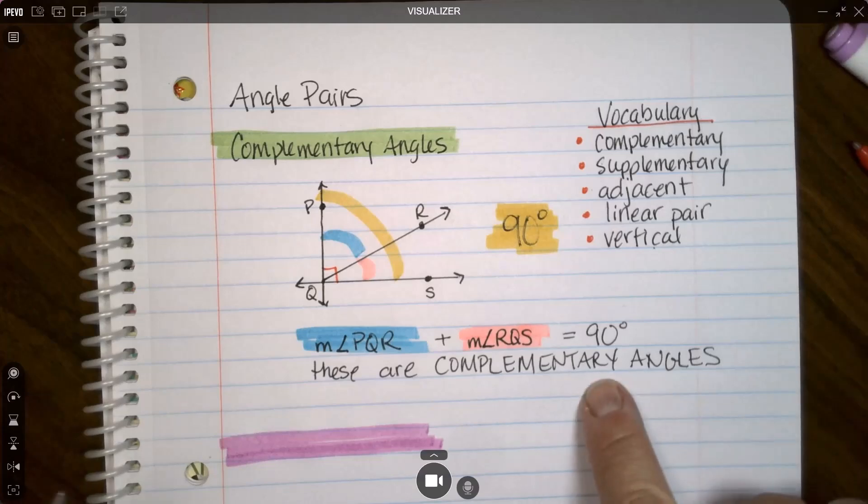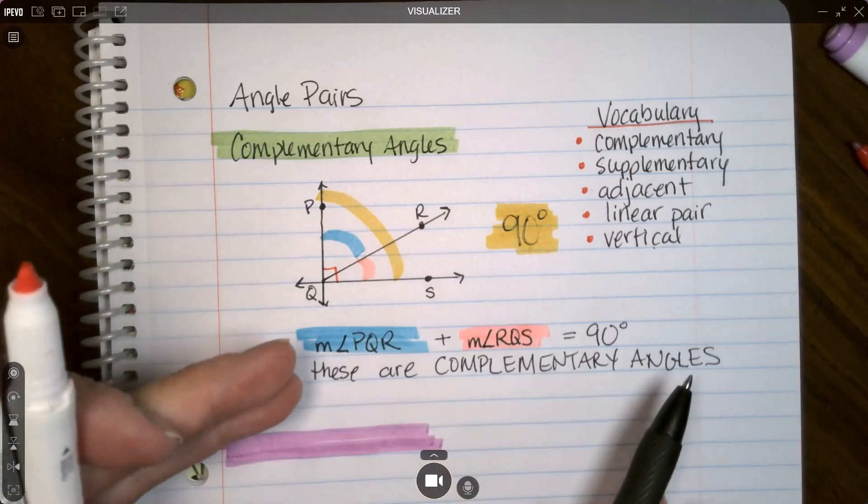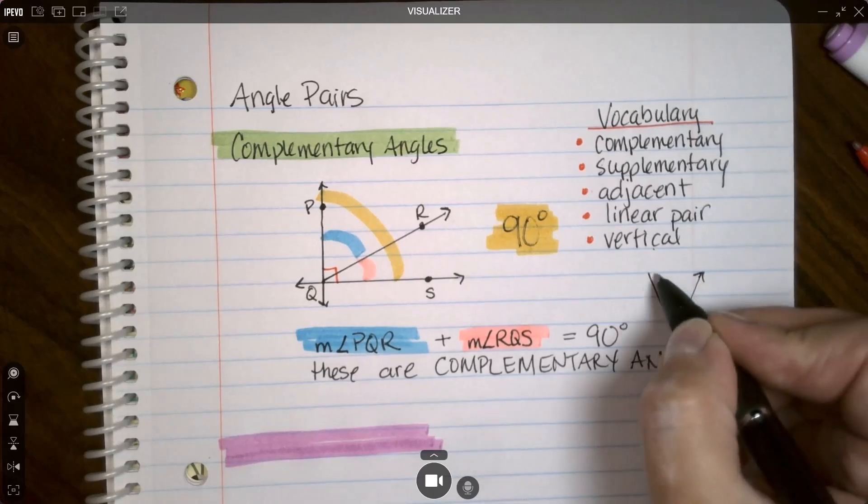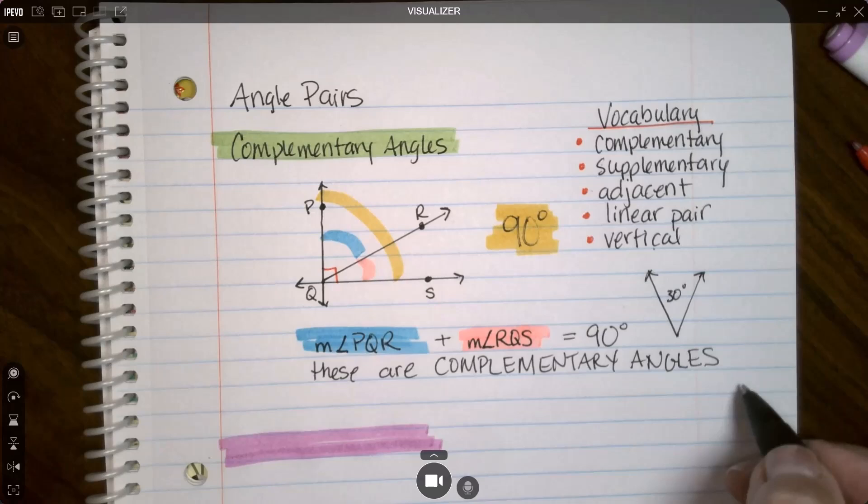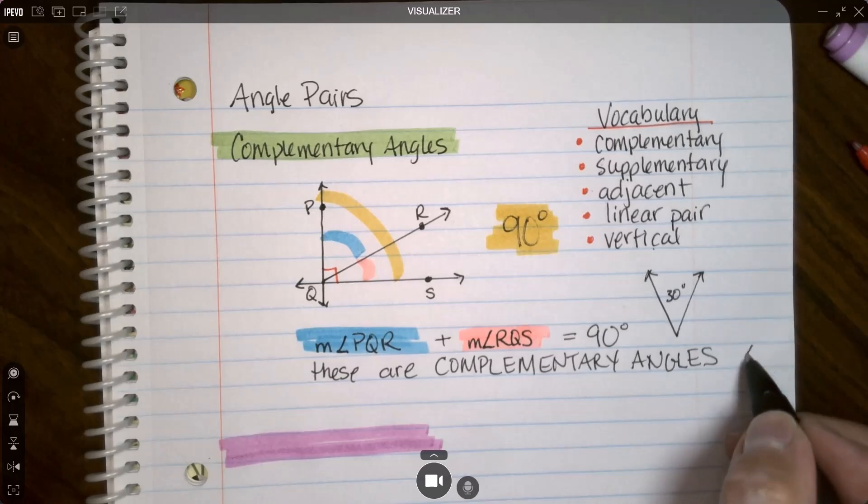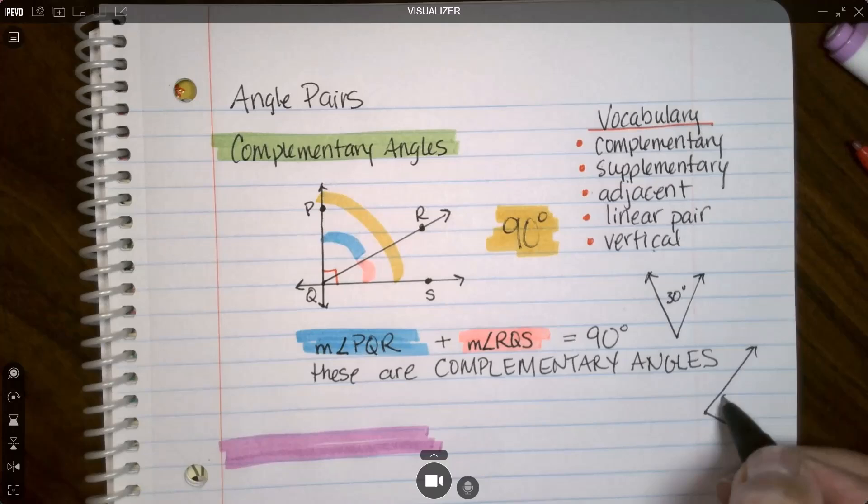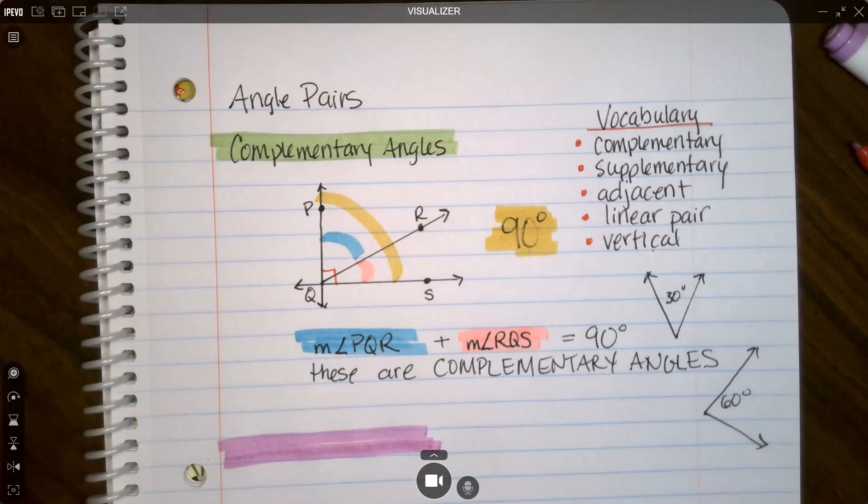A point about complementary angles is they don't need to be next to each other like this. This is the easiest way to teach it, but complementary angles could be split apart. So if I had an angle over here that was 30 degrees and another one over here 60 degrees, these two would also be called complementary angles because 30 plus 60 is 90. They don't need to be right next to each other. That's adjacent if that's the case.